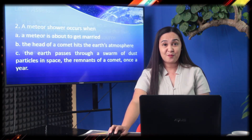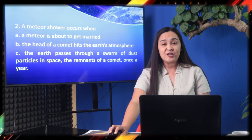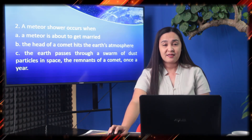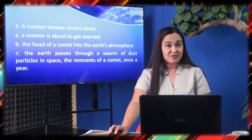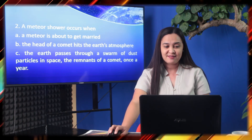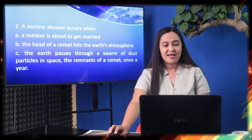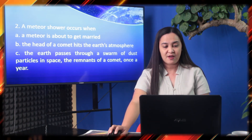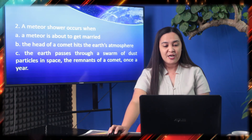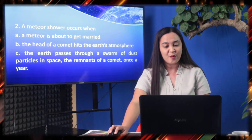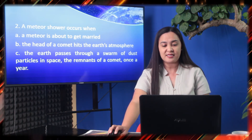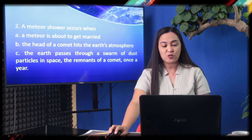Number 2: A meteor shower occurs when — A. A meteor is about to get married; B. The head of a comet hits the Earth's atmosphere; C. The Earth passes through a swarm of dust, particles, and space remnants of a comet, once a year.